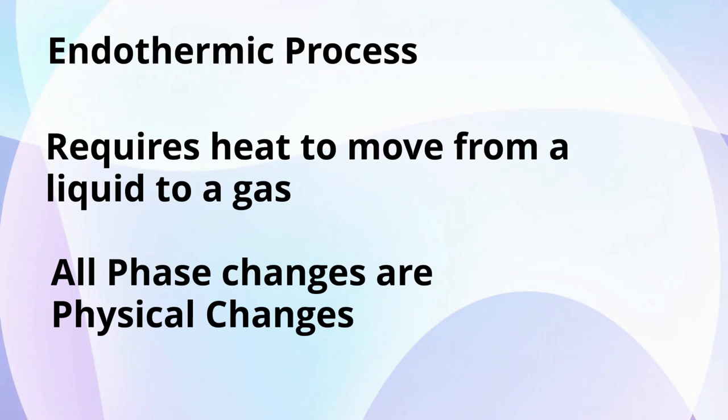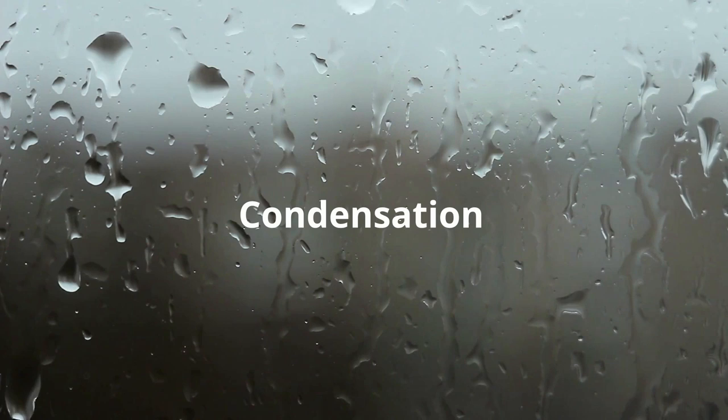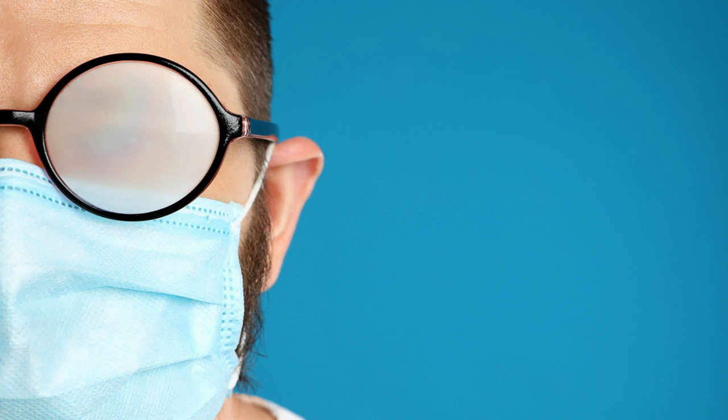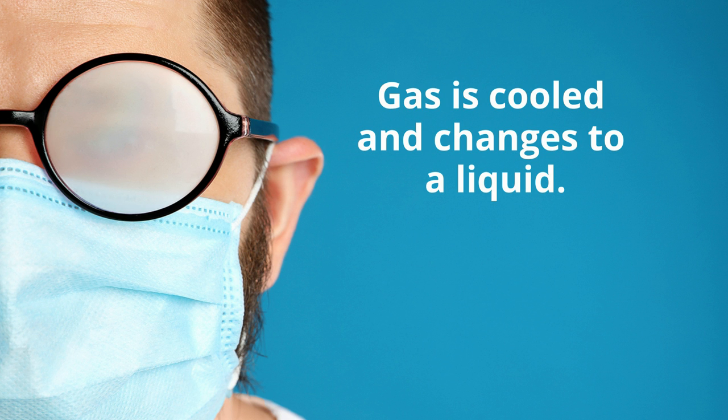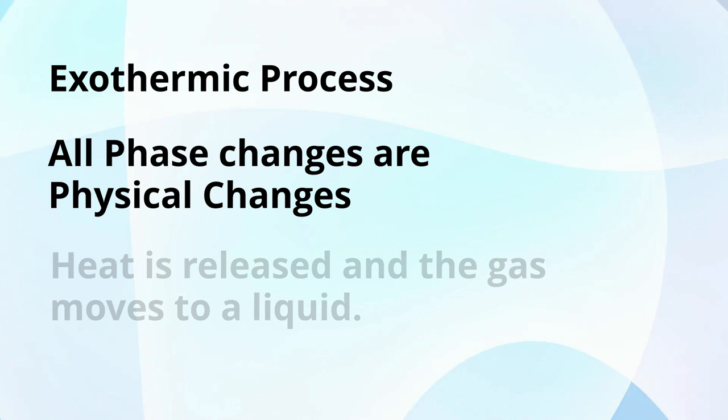Condensation occurs when a gas changes into a liquid. Examples include when droplets occur on the side of a glass or your glasses get fogged up. Condensation occurs when a gas is cooled down and changes into a liquid. Condensation is an exothermic process because heat is released, which causes the gas to move to a liquid.